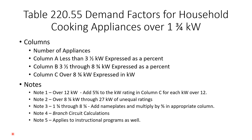In the 2020 code, it's on page 70-78, Table 220.55. If you're using a different edition, I doubt these numbers have changed — the 2017 is the same. Either way, for the 2020 code it's Table 220.55: demand factors for household cooking appliances over one and three-quarter kilowatts.